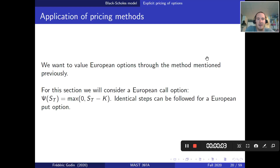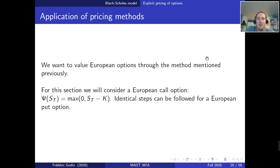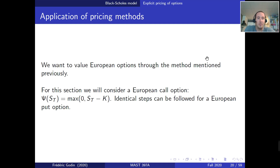Hi everybody, so this is the second video associated with chapter 3 of the course. In this chapter we introduced the Black-Scholes model, where the dynamics of the underlying asset of a given derivative is driven by what we call a geometric Brownian motion. In the last class we discussed that derivatives could be priced with a formula analogous to what we saw in chapter 2, which is that the price of some option is the expected discounted payoff of the option, but where the expectation is not taken under the true physical measure, but rather under a risk-neutral measure, under which the dynamics of the underlying asset is slightly different.